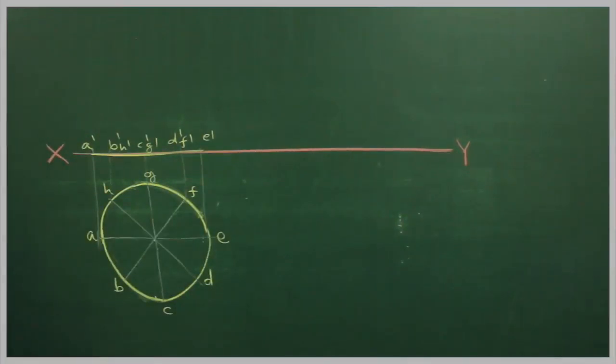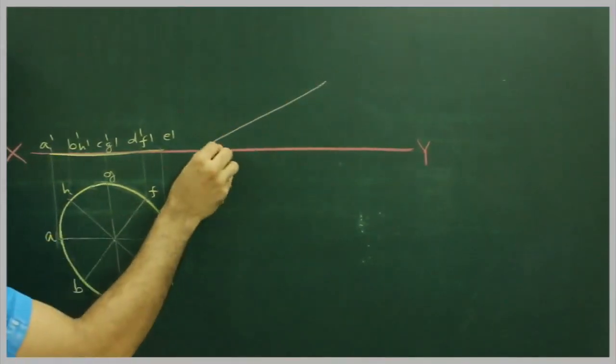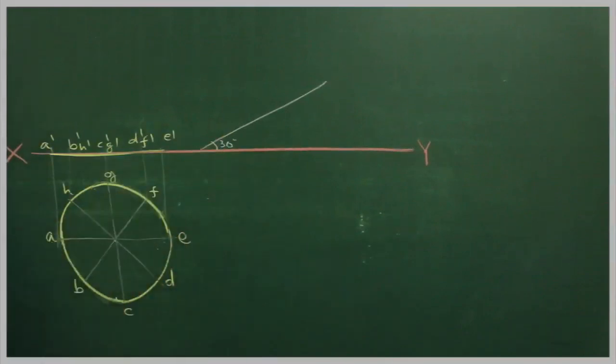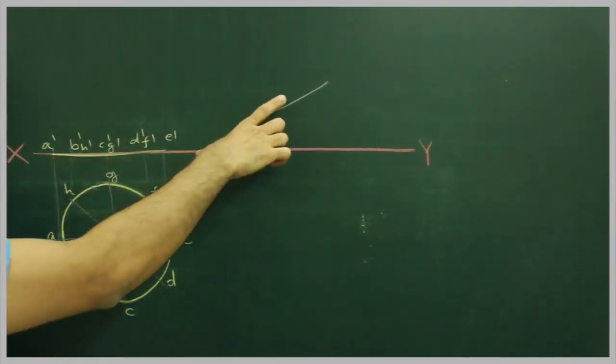After this we have given that surface is inclined at 30 degrees to HP, so I will draw a 30 degree line. I will take A dash to B dash and cut it on this.